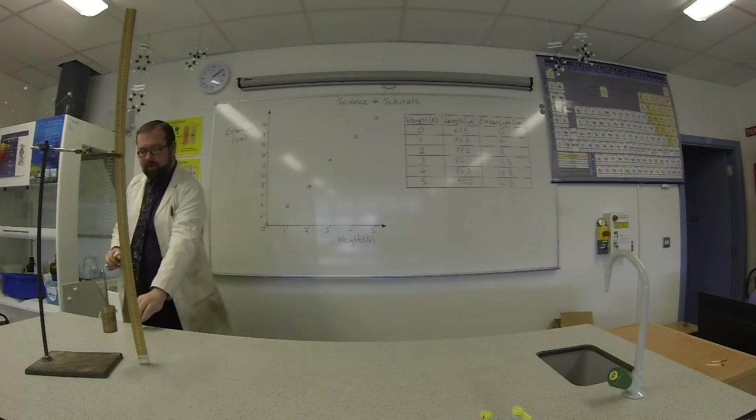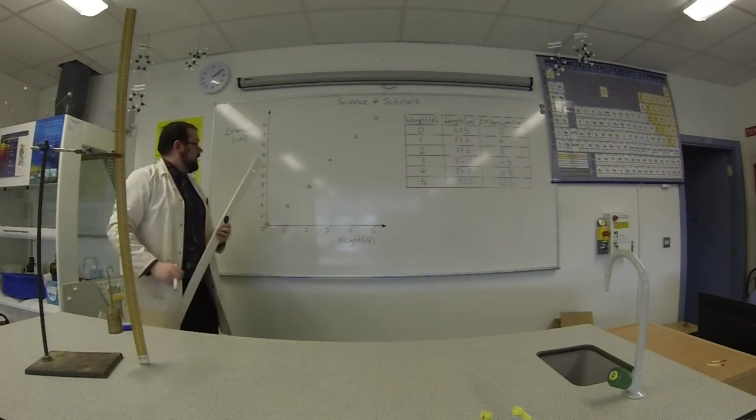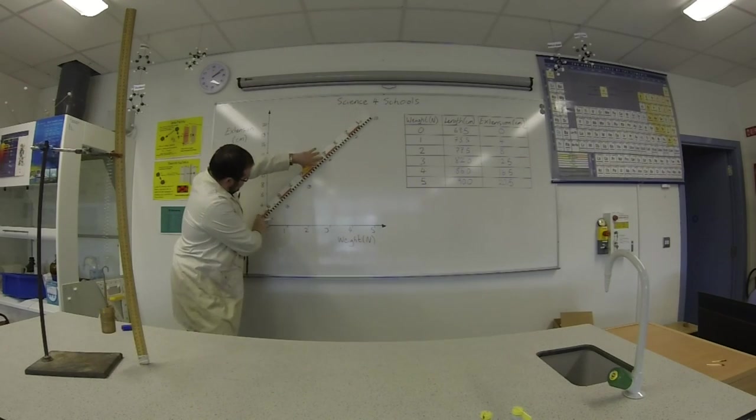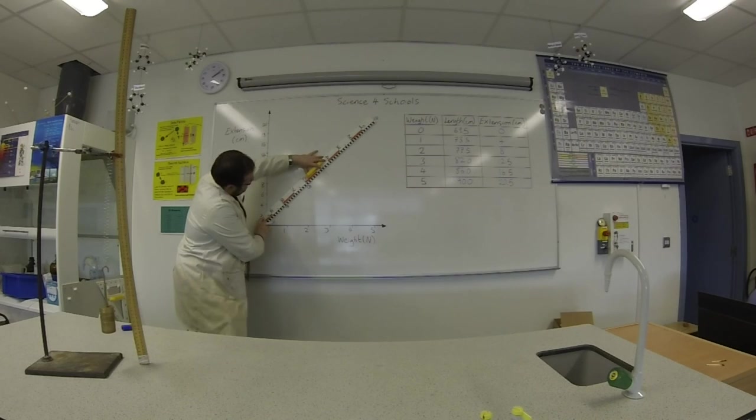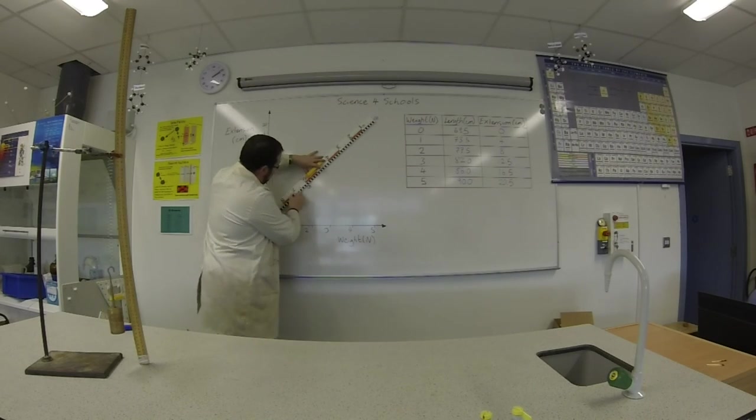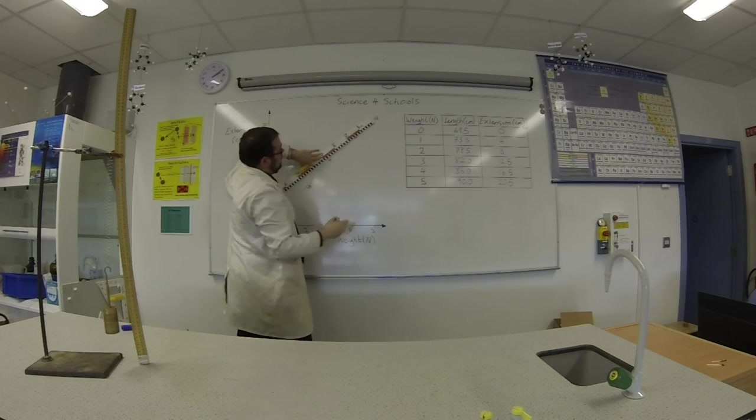Now you may notice a bit of a pattern between each of these points. And in fact, if we try and plot a best fit line through each of these, it should end up pretty much as a straight line.